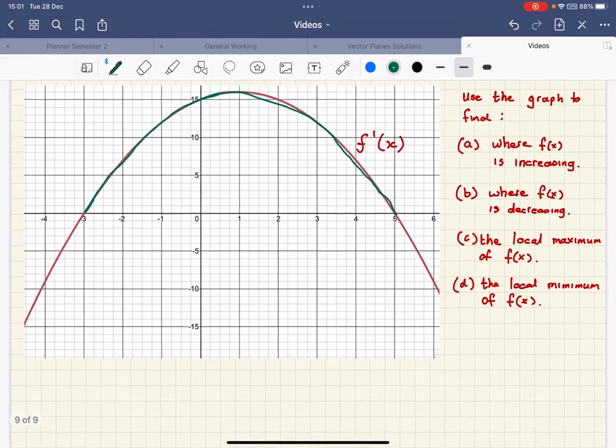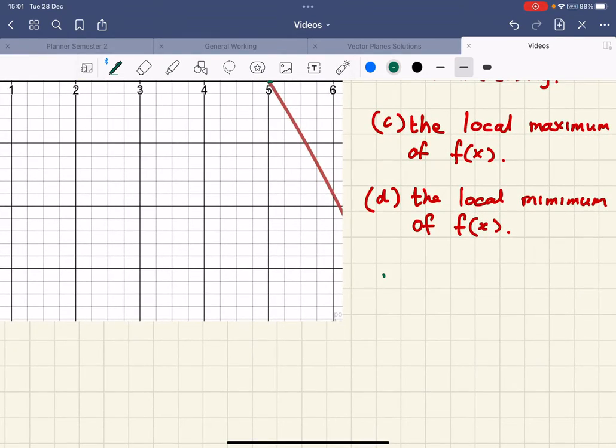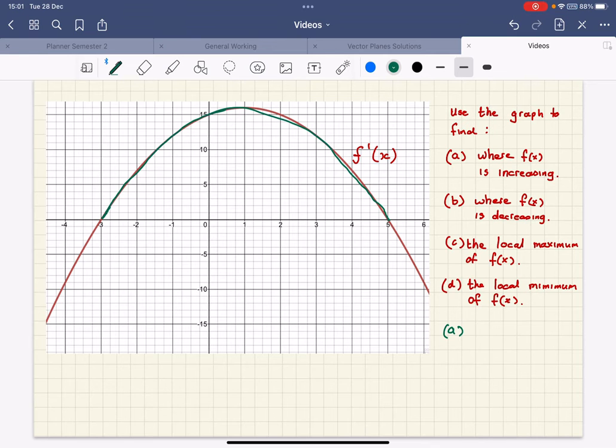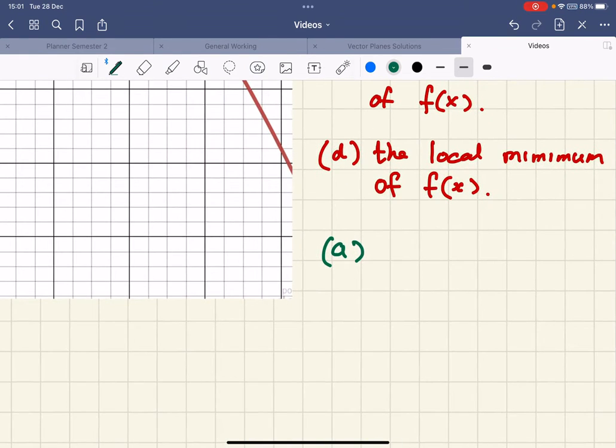OK, so we can answer that first one and say between -3 and 5, those two points, we are increasing and we're not equal to that. So that's where it's increasing.